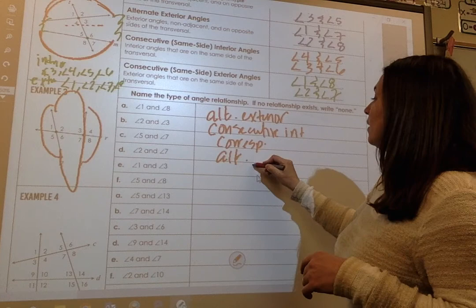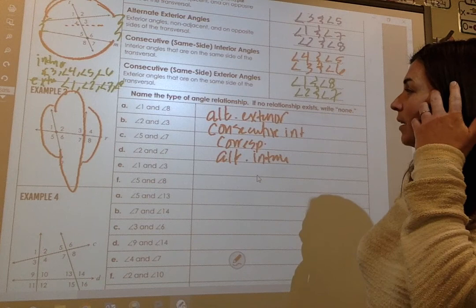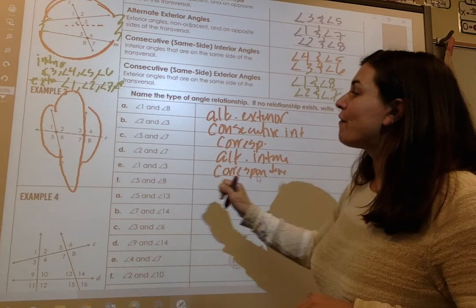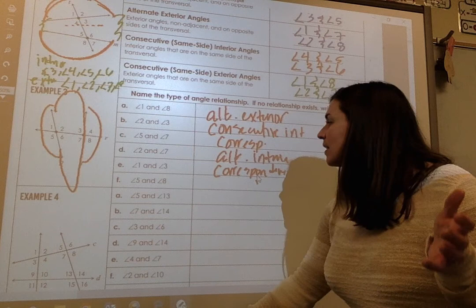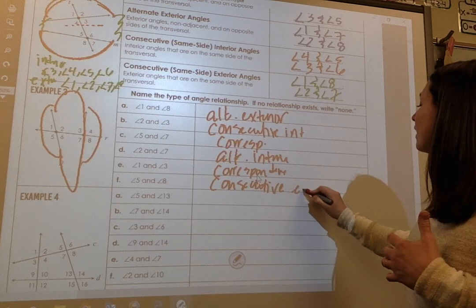Angle 2 and angle 7 are alternate interior. Angle 1 and angle 3 are corresponding. Angle 5 and angle 8 are consecutive exterior — I like to use 'consecutive' because it sounds more grown-up.